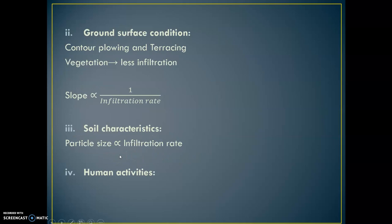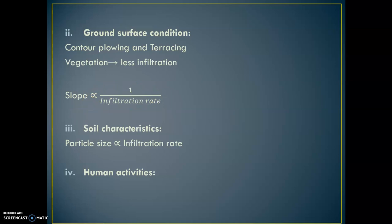The second factor is ground surface condition. If contour plowing or terracing is done, we observe less infiltration. Even when vegetation is there, a less rate of infiltration would be there. Slope is inversely proportional to infiltration rate — if more slope is there, less opportunity exists for infiltration, and water will flow directly, resulting in less infiltration.